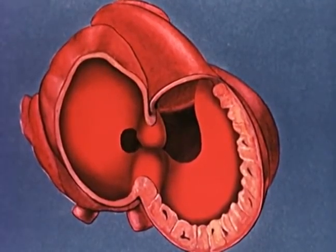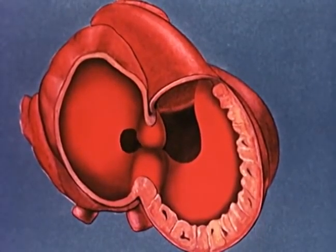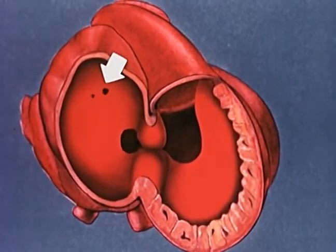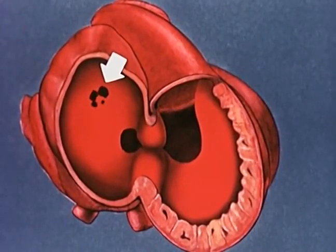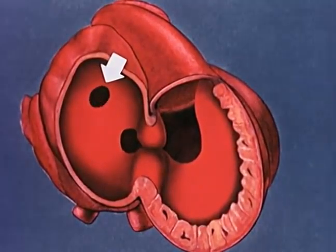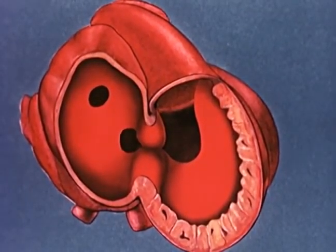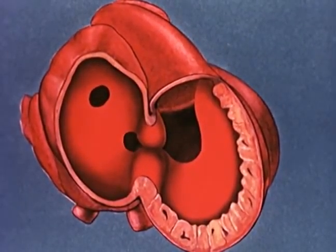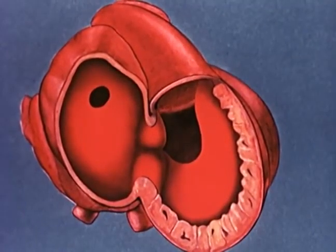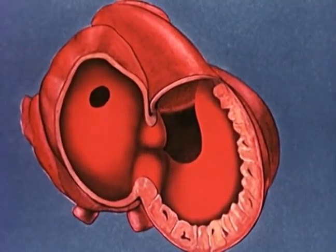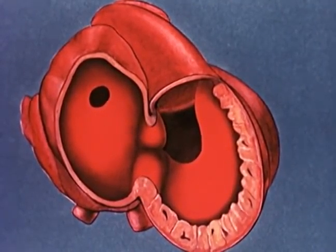Before the foramen primum becomes obliterated, a new opening appears high on the interatrial septum. The timely development of this orifice, the foramen secundum, provides uninterrupted shunting of blood from the right atrium directly into the left.